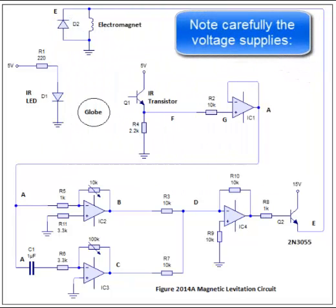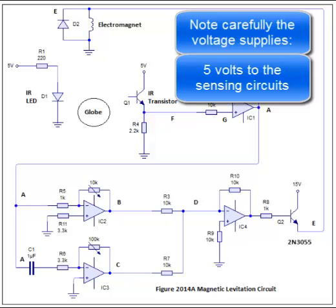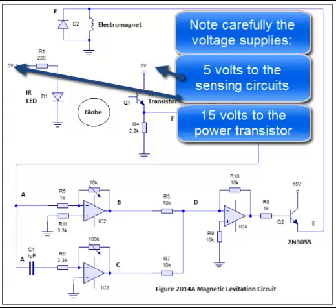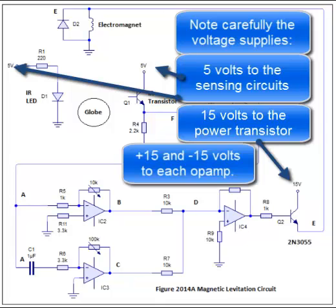Note carefully the voltage supplies: 5 volts to the sensing circuits, 15 volts to the power transistor, plus 15 and minus 15 volts to each op-amp.